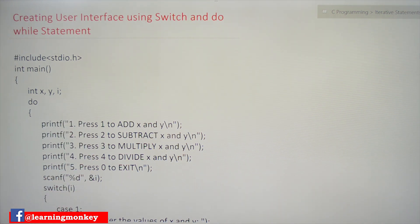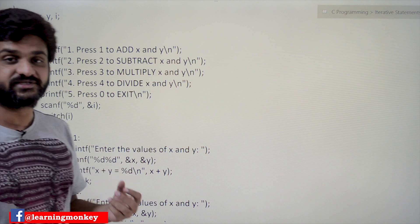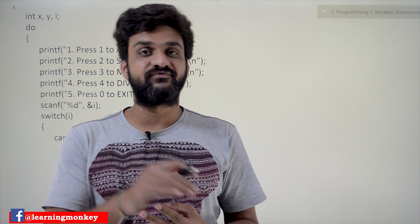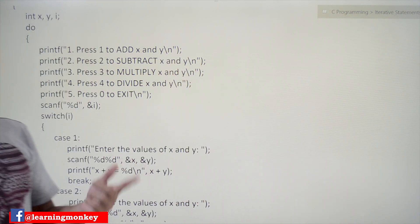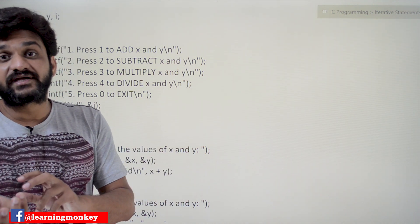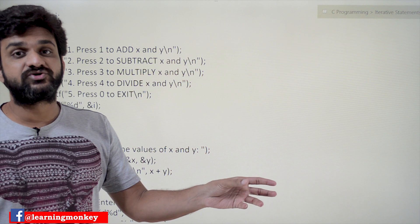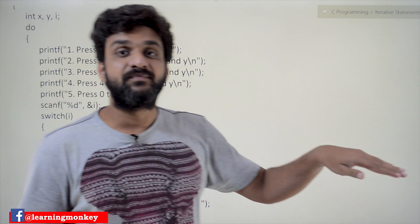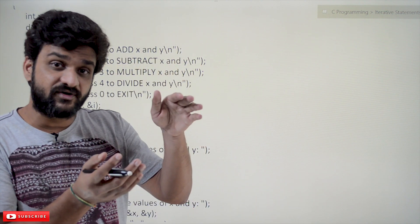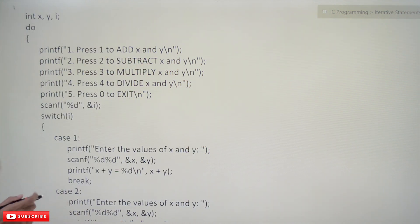This is the program where we have taken three variables X, Y, and I. The user can provide two numbers X and Y, and the program is going to ask the end user whether to add, subtract, multiply, or divide. Based upon the option given by the user, the particular calculation is done. For addition, one option; subtraction, one option; multiplication, one option; and division, one option. It is just like a simple calculator.